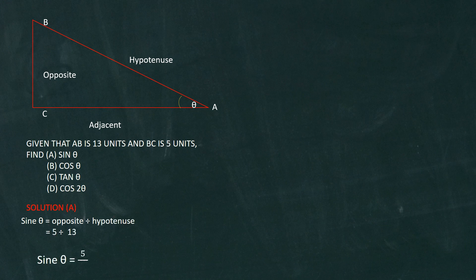To find the sine of theta of any angle, you do the opposite divided by the hypotenuse. Now in this example, you're already given the opposite which is 5, and we're also given the hypotenuse which is 13. So easily, sine theta is 5 over 13.